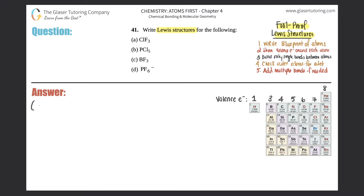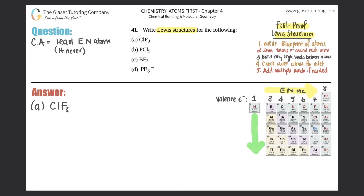For part A, we need the Lewis structure for ClF₃. First, figure out which atom goes in the middle — the central atom is always the least electronegative. Hydrogen is never in the middle. The electronegativity trend: it increases from left to right and decreases as you go from top to bottom on the periodic table.